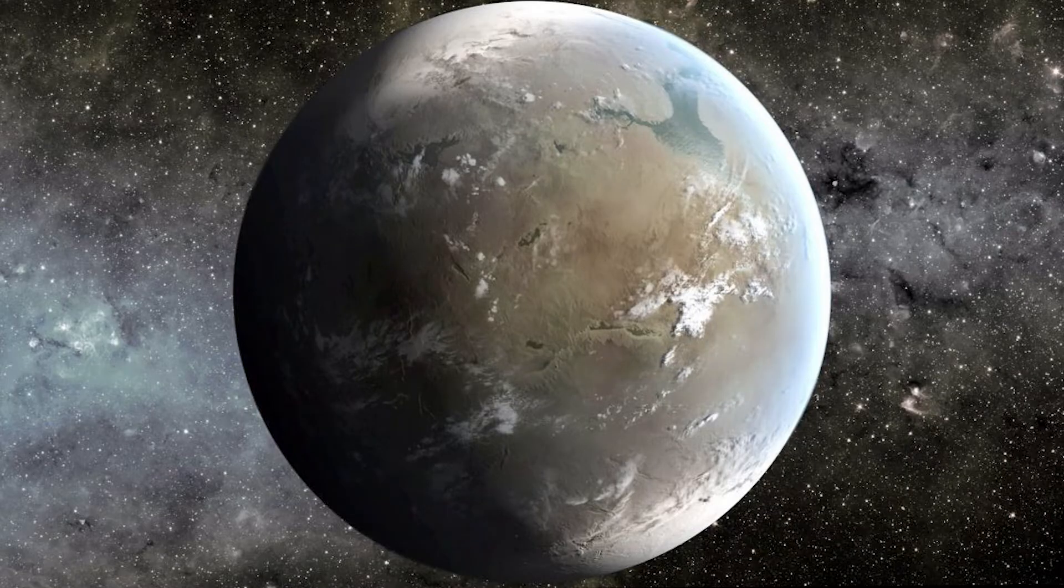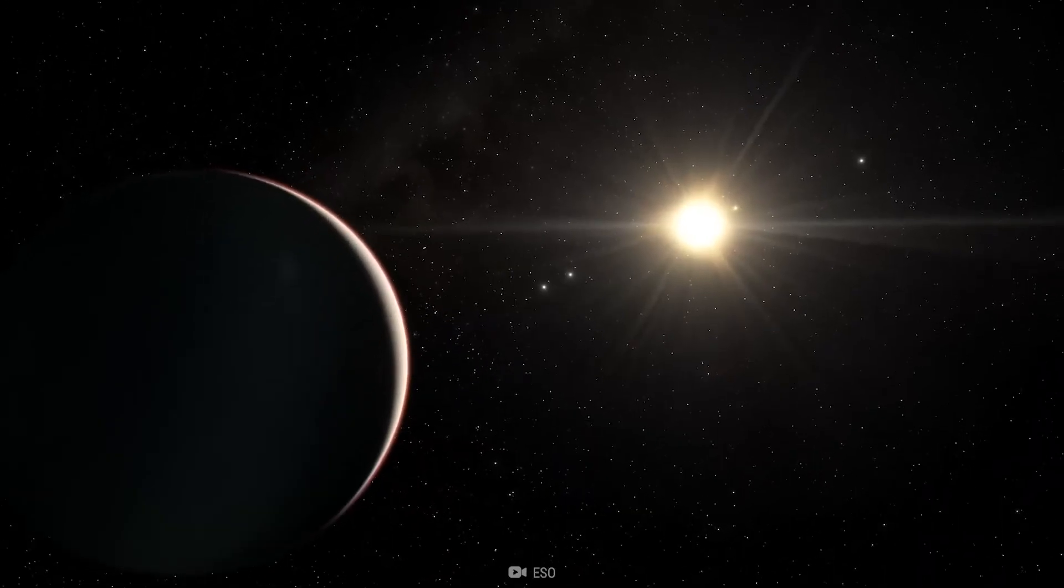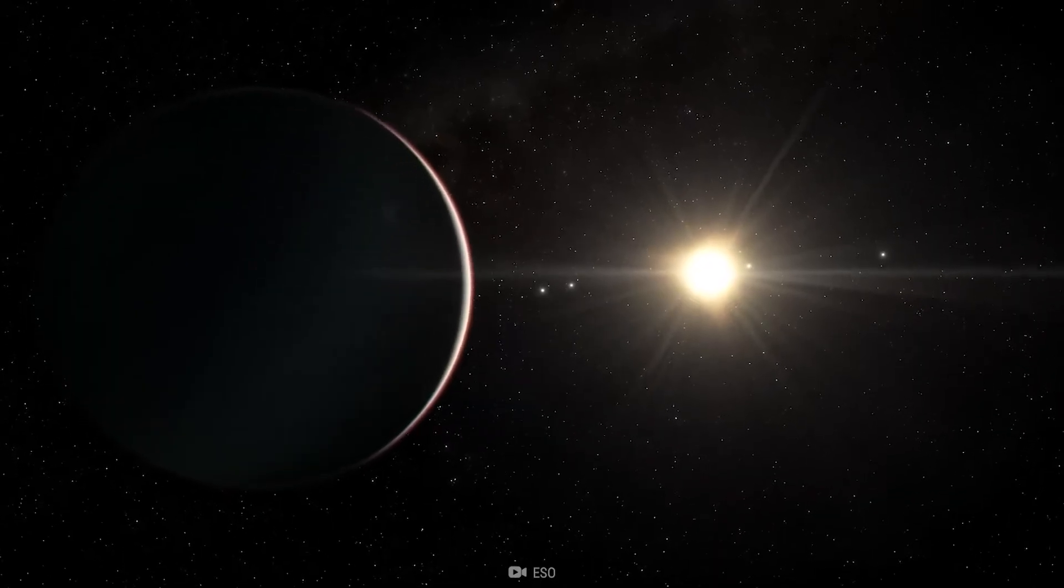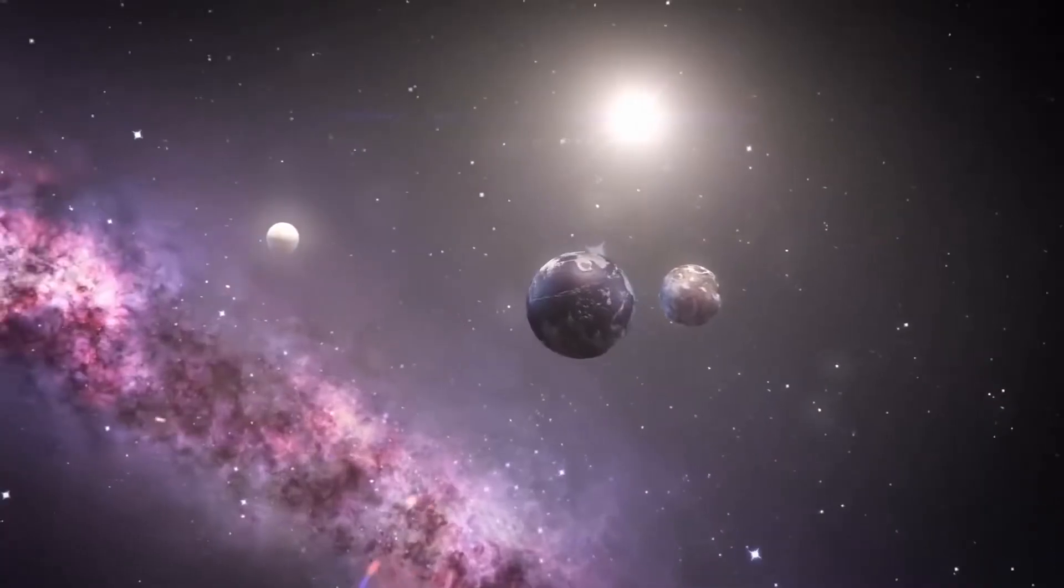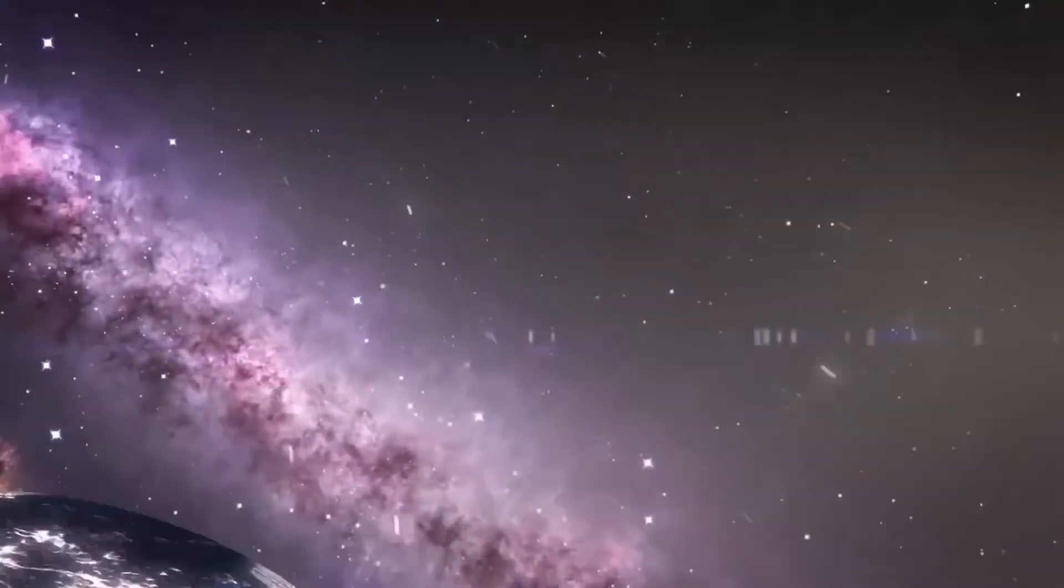Number four, Kepler-62f. According to NASA, this planet is about 40% bigger than Earth and revolves around a star that is significantly cooler than the Sun. However, Kepler-62f is directly within the habitable zone thanks to its 267-day orbit.